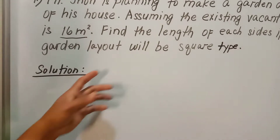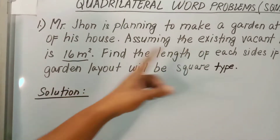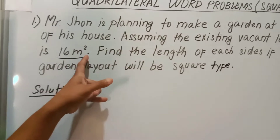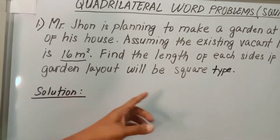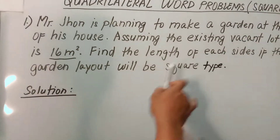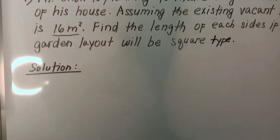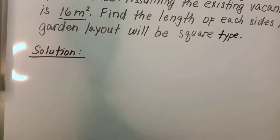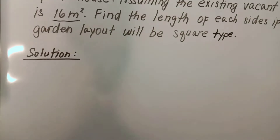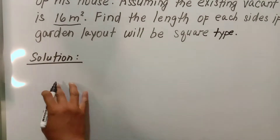Given: the area of the existing lot is 16 square meters. The required in this word problem is the length of each side if the garden layout will be a square type quadrilateral.